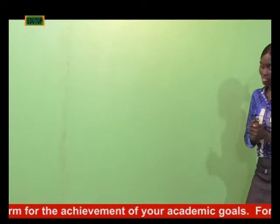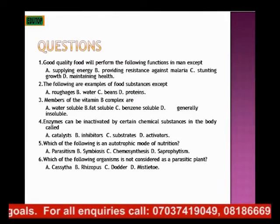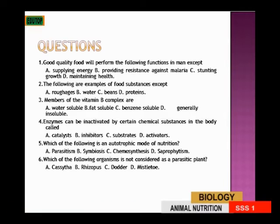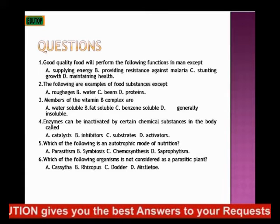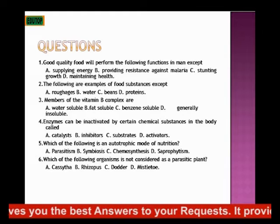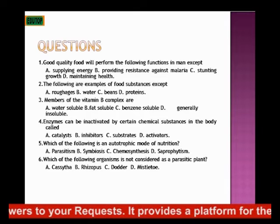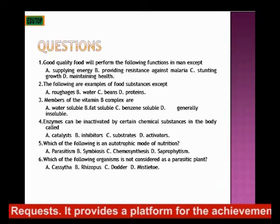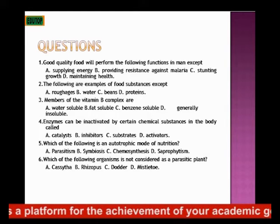Now let's try some practice questions. Question 1: Good quality food will perform the following functions in man except: A. Supplying energy. B. Providing resistance against malaria. C. Stunting growth. D. Maintaining health. Question 2: The following are examples of food substances except: A. Roughage. B. Water. C. Beans. D. Protein. Question 3: Members of vitamin B complex are: A. Water-soluble. B. Fat-soluble. C. Benzene-soluble. D. Generally insoluble.